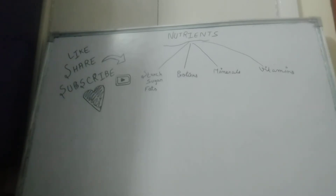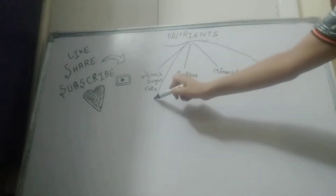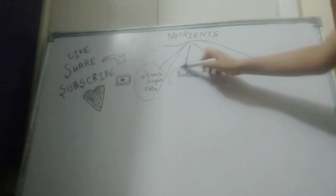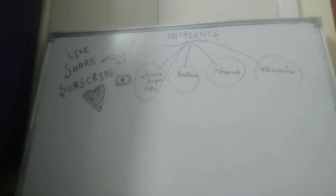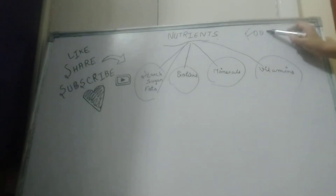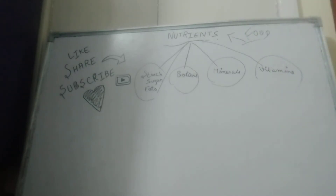Nutrients have four parts. First, carbohydrates and fats. Second, proteins. Third, minerals. And fourth, vitamins. These are the four parts of nutrients. Every food has nutrients — each food has at least one nutrient or more than one. So today we will study what the nutrients are.